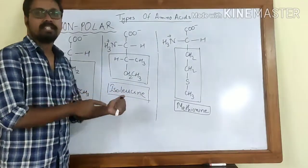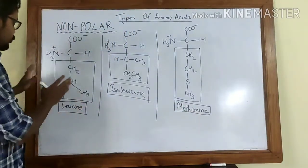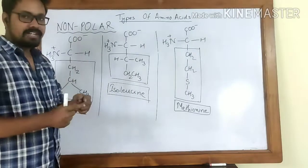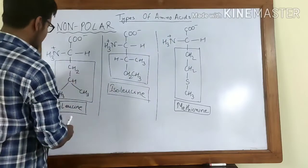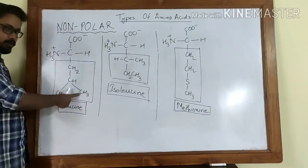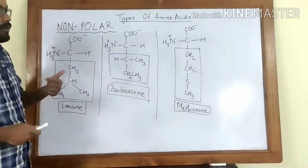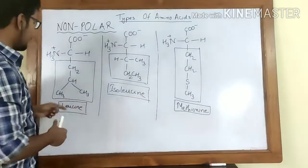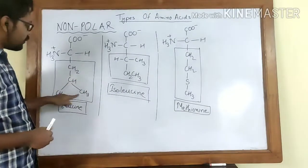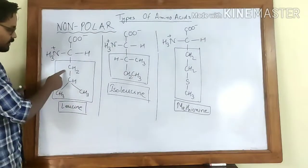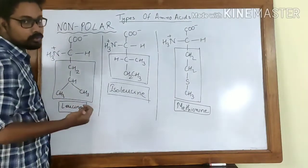Now let us look at the next trio: leucine, isoleucine, and methionine. Leucine has an extended version of valine's side chain — a four-carbon butyl group: CH₂CH(CH₃)CH₃. Valine had a propyl group; leucine has a butyl group. This is again an aliphatic side chain, non-polar, and not going to react with water.